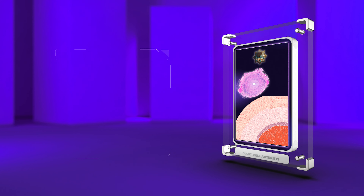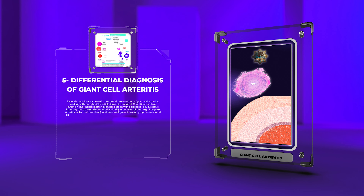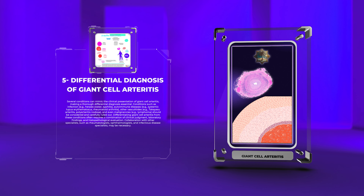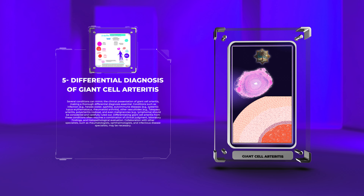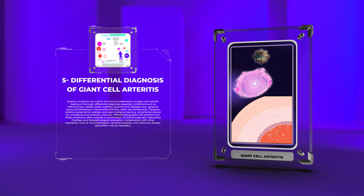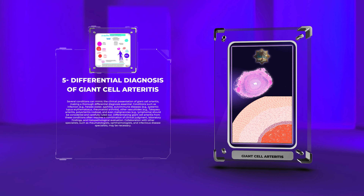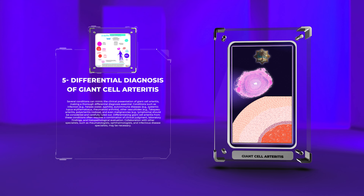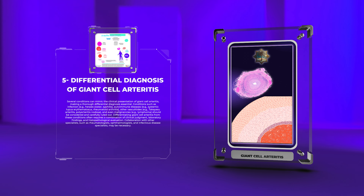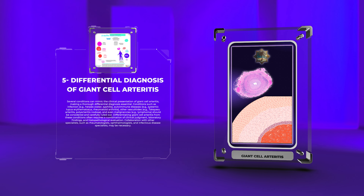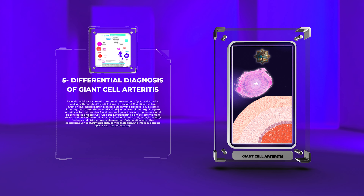Several conditions can mimic the clinical presentation of giant cell arteritis, making a thorough differential diagnosis essential. Conditions such as infections (e.g., herpes zoster, syphilis), autoimmune diseases (e.g., systemic lupus erythematosus, rheumatoid arthritis), other vasculitides (e.g., Takayasu arteritis, polyarteritis nodosa), and even malignancies (e.g., lymphoma) should be considered and carefully ruled out. Differentiating giant cell arteritis from these conditions often requires a combination of clinical judgment, laboratory findings, and histopathological evaluation.